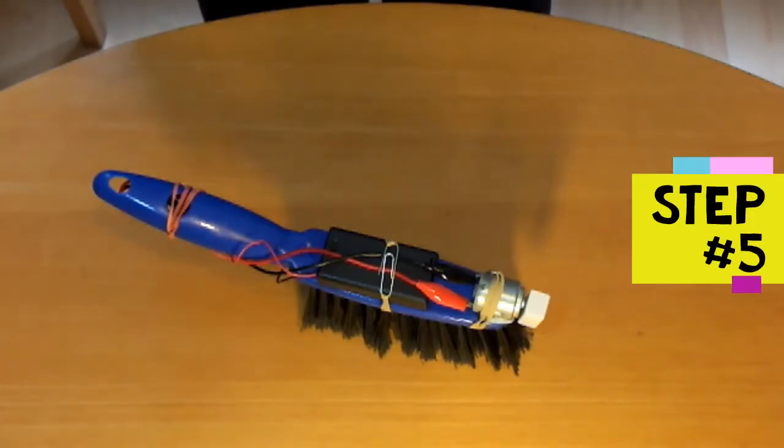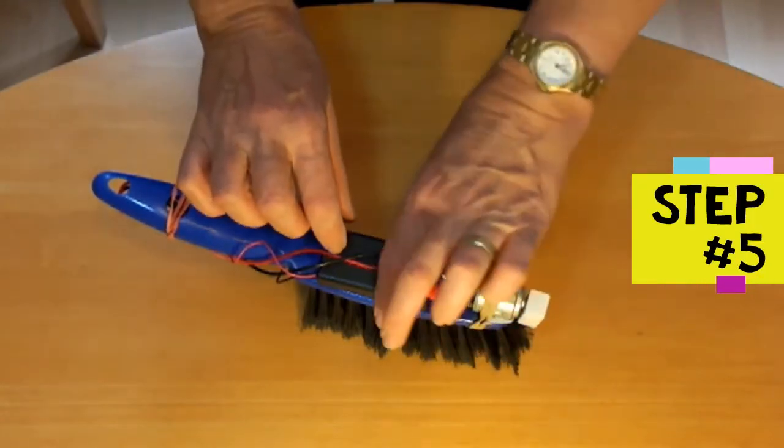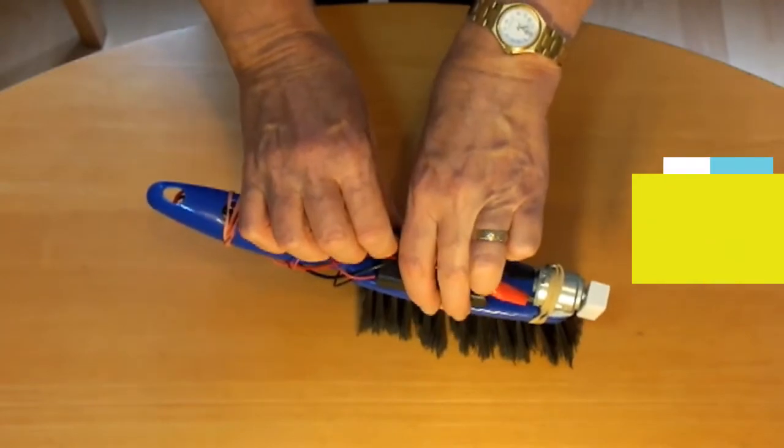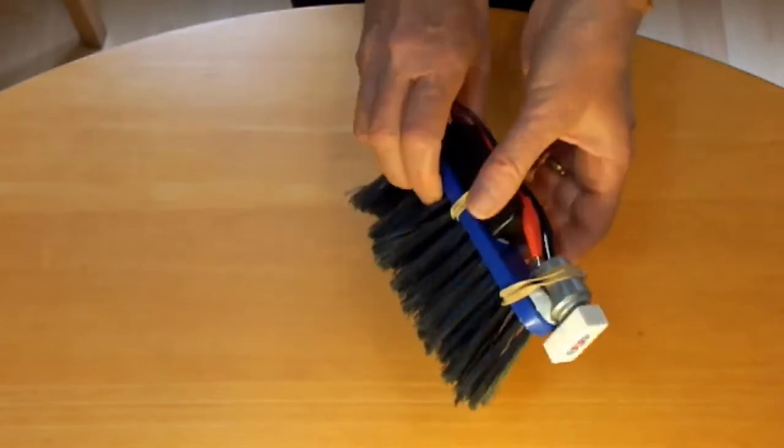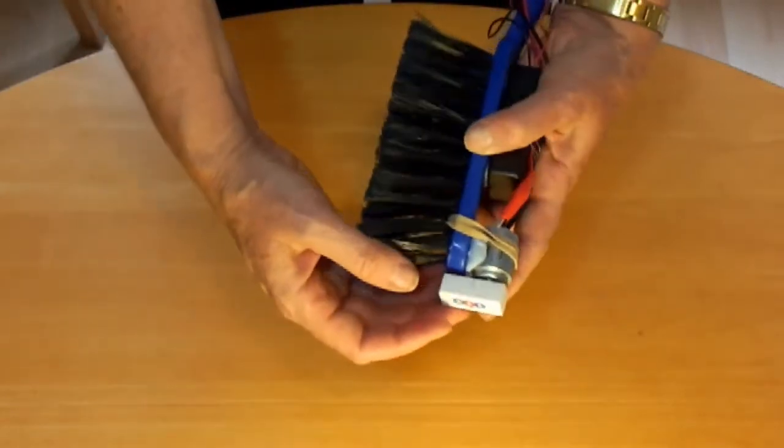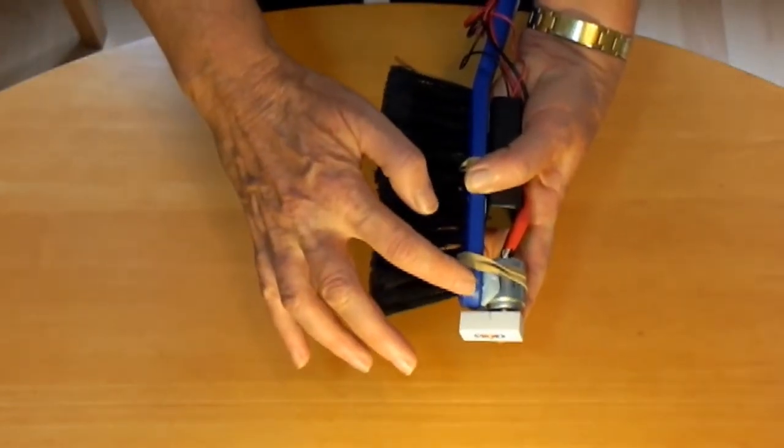Step five is to switch on the brush monster. Switch on the battery box and check the eraser on the end of the motor shaft goes round. If it doesn't, then try to work out why. For example, the eraser could be jammed against the end of the brush.